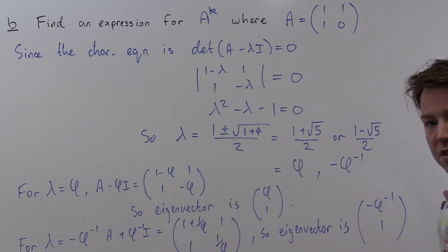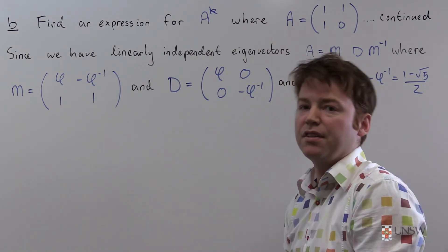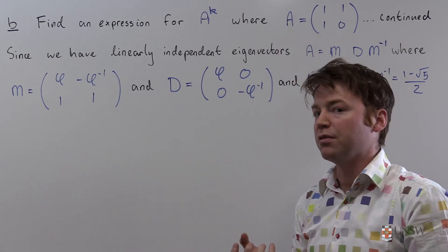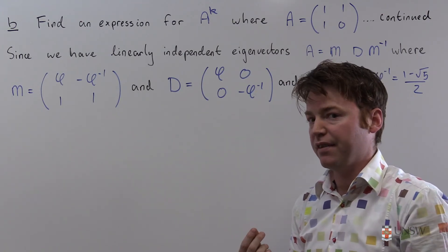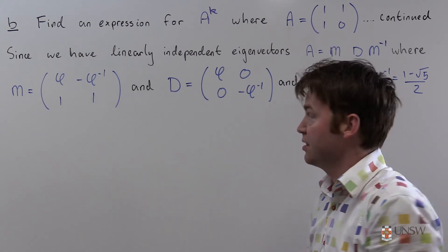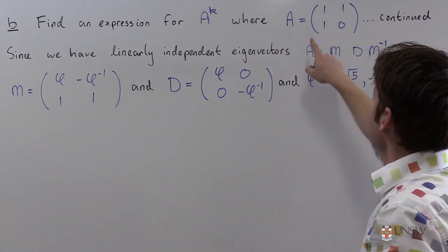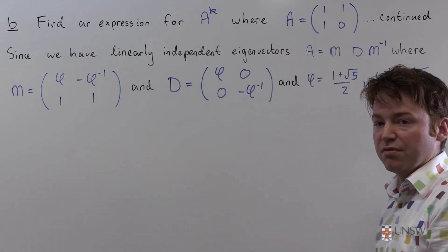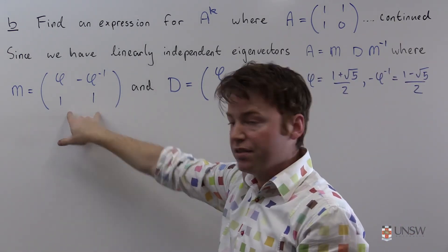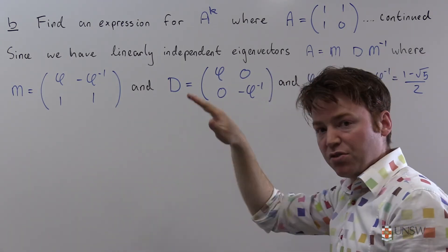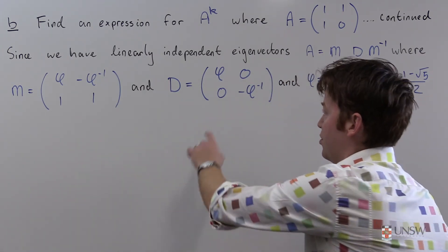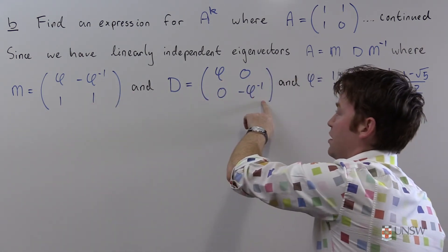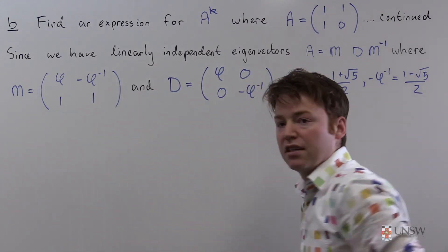Now let's diagonalize the matrix. So we have the eigenvalues and eigenvectors in hand, and because we have the full complement of linearly independent eigenvectors, we can diagonalize the matrix. By diagonalize the matrix, I mean write it like this, as a matrix times a diagonal matrix times a matrix inverse. So M is this matrix, D is the diagonal matrix of eigenvalues. And notice that the first eigenvalue corresponds to the first eigenvector, the second eigenvalue corresponds to the second eigenvector.